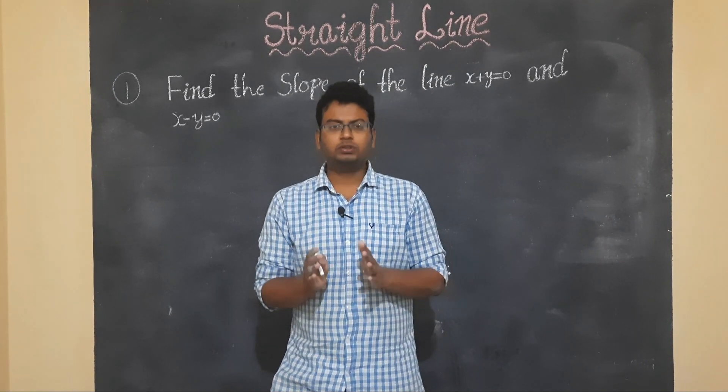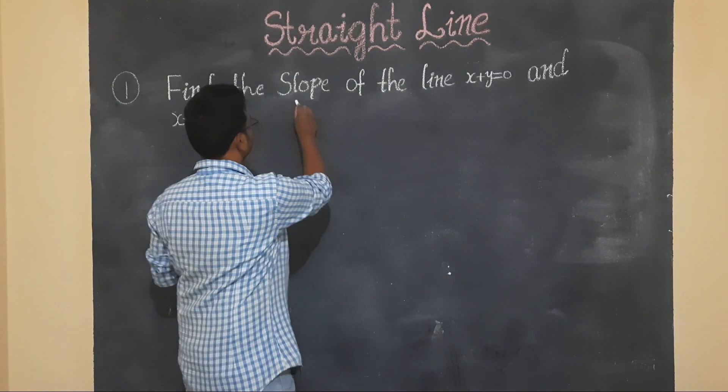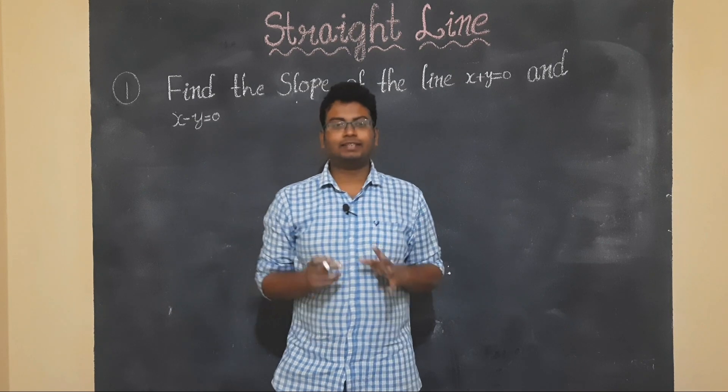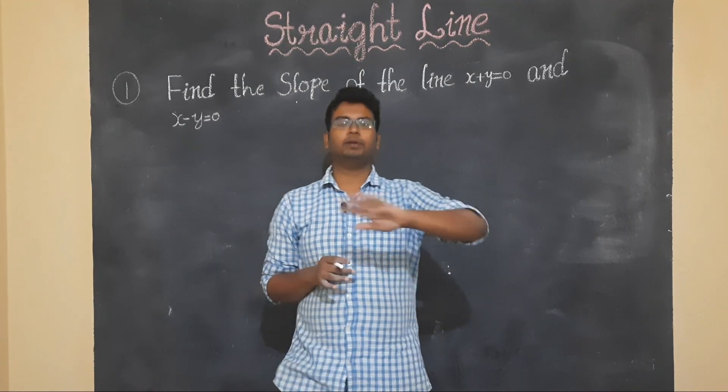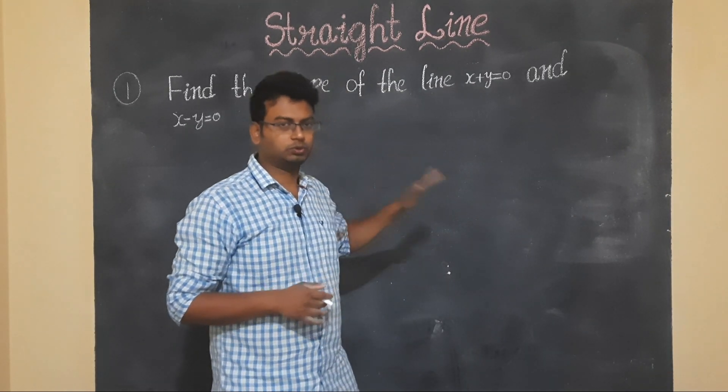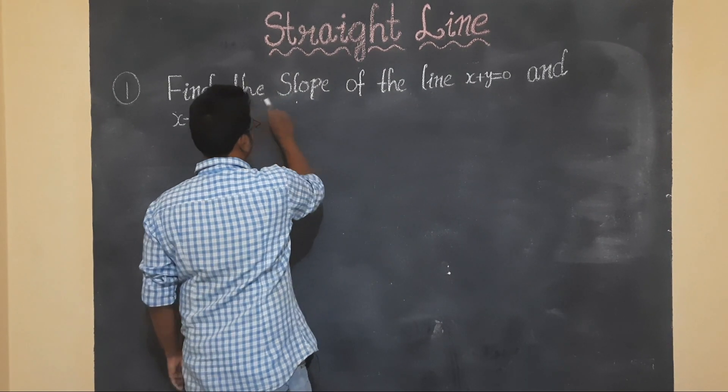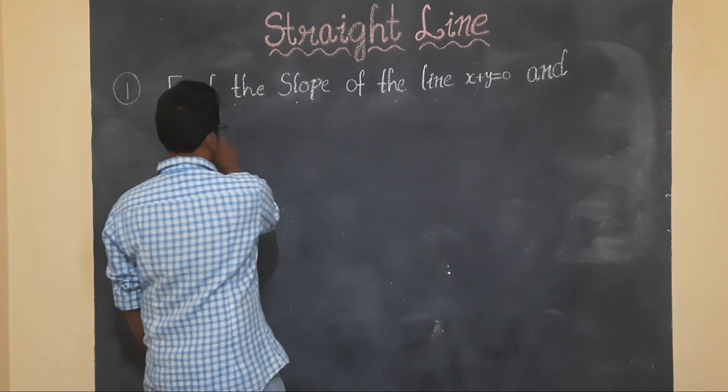The most basic concept of straight line chapter is slope. In my straight line chapter, we'll repeatedly use the slope terminology. As slope and its details, I will find the slope of the line x plus y is equal to 0 and x minus y is equal to 0.